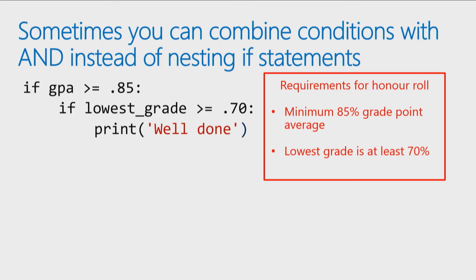So I can do this by nesting if statements. We learned how to do nesting if statements. I say if the GPA, your grade point average is greater than or equal to 85 percent, 0.85, then let's check your lowest grade. If your lowest grade is greater than or equal to 0.7, then that means you've met both requirements. Well done, you've made the honor roll.